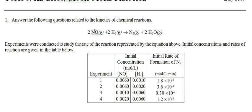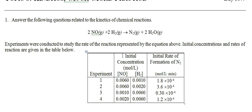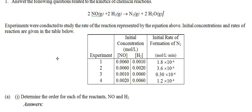If both the nitrogen monoxide and the hydrogen gas happen to be second order, that is strictly coincidence. So again, oftentimes we don't really care about the balanced equation. Let's get right to the question. Experiments were conducted to study the rate of reaction represented by the equation above; initial concentrations and rates of reactions were listed in the table.